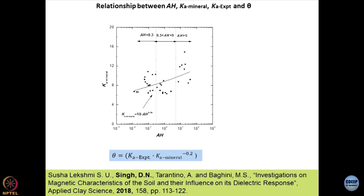The basic premise of our research is that the area itself can be demarcated into three segments: less than 0.3, 0.325, and more than 5. We came out with the relationship that dielectric constant is a function of the area of the hysteresis — the area of hysteresis becomes a lumped parameter containing all the information about the geomaterials. We went one stage ahead and related this K value with the volumetric moisture content, where Ka from the experiment — the bulk dielectric constant of the soil sample — and the type of minerals predominant in the soil mass have been linked together. This work was published in Applied Clay Science in 2018: investigations on magnetic characteristics of soil and their influence on its electric response.